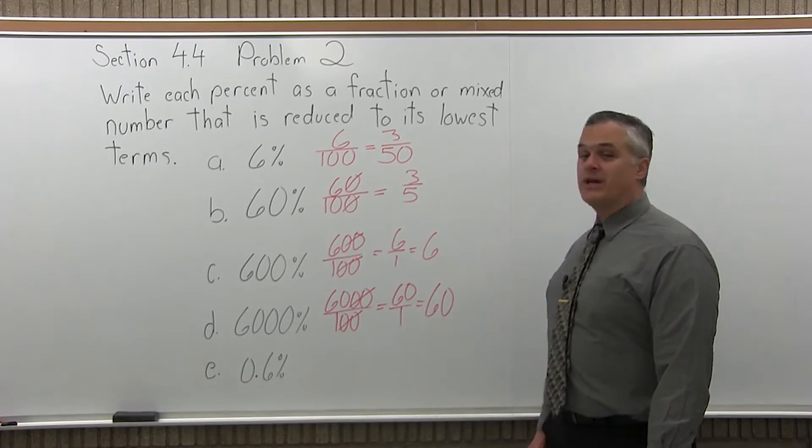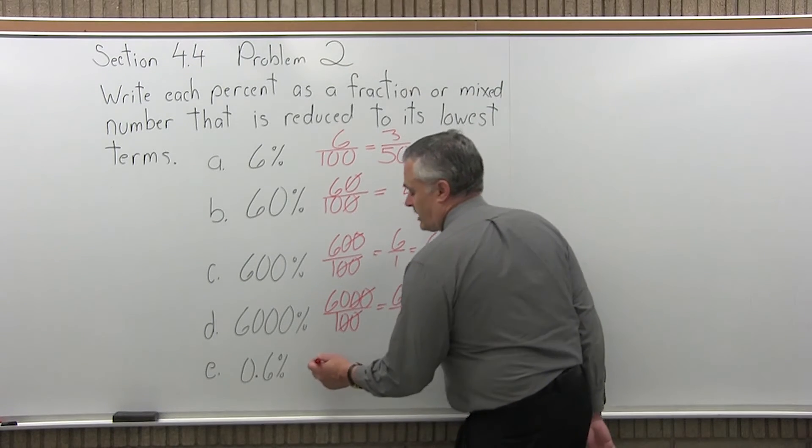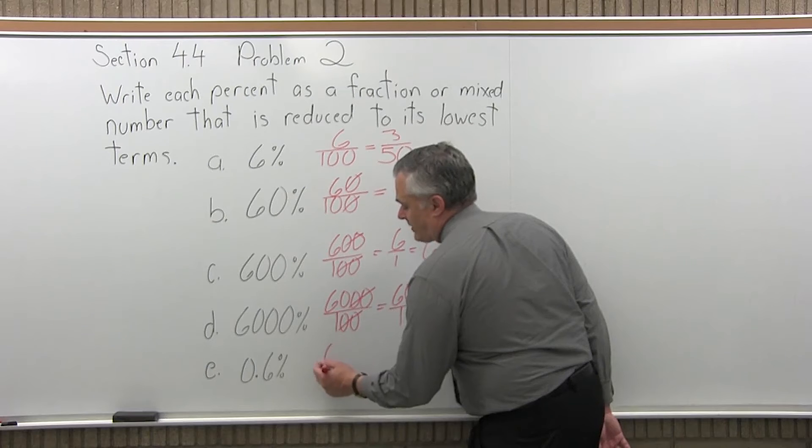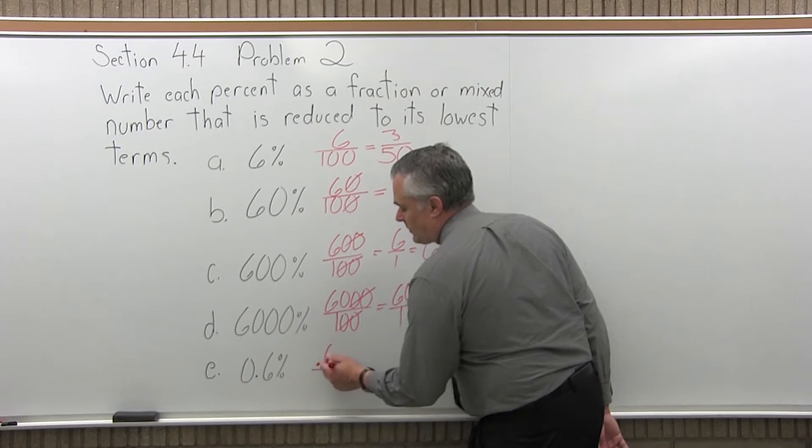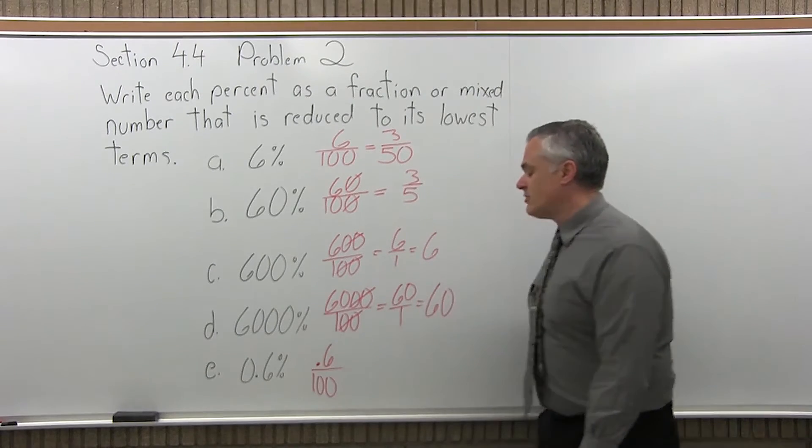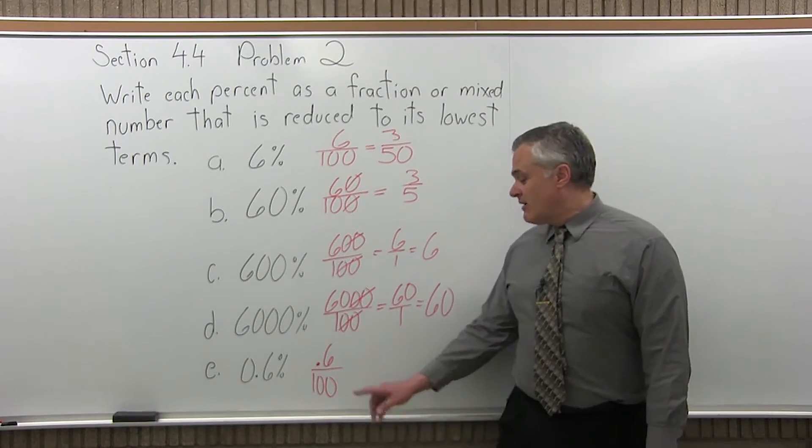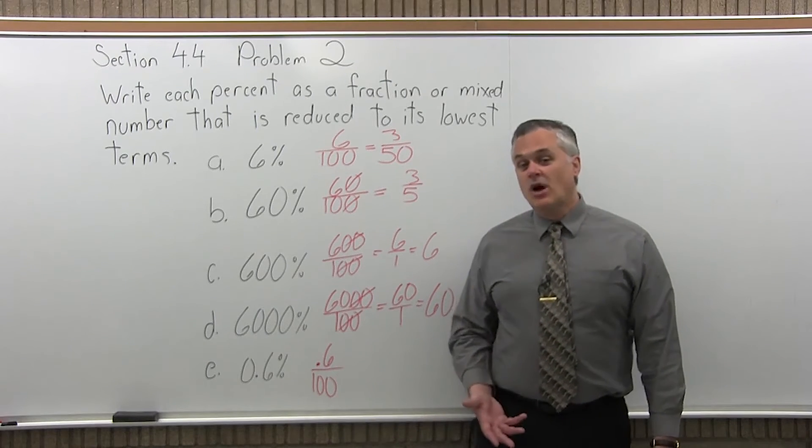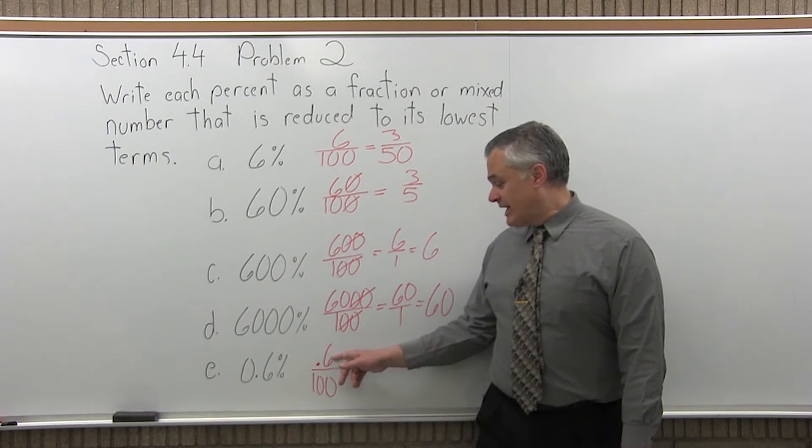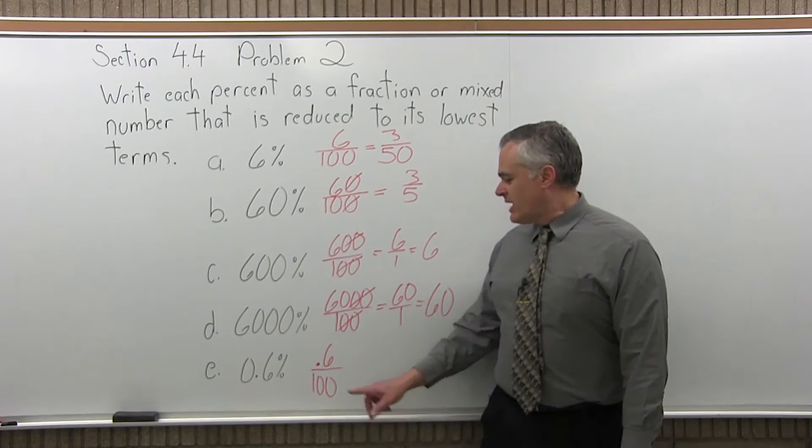And now the last one, 0.6%. So same process. Write the percent over 100. So I have 0.6 over 100. Reduce if you can. Now, they're both even, but you have a little bit of a problem with this one. You have a decimal as part of a fraction. You don't really want to do that. So how do we handle that?